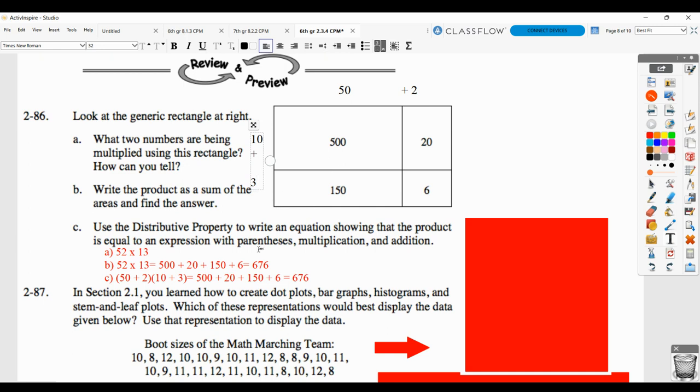So then they want you to write the product as a sum of areas and find the answer. So 52 times 13 would equal the 500 plus 20 plus 150 plus 6, equaling 676.